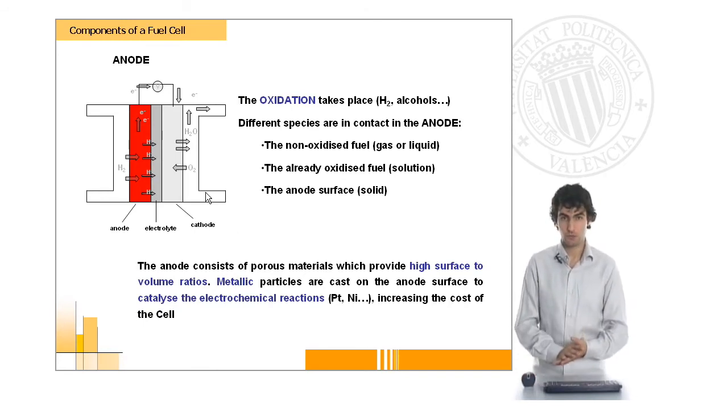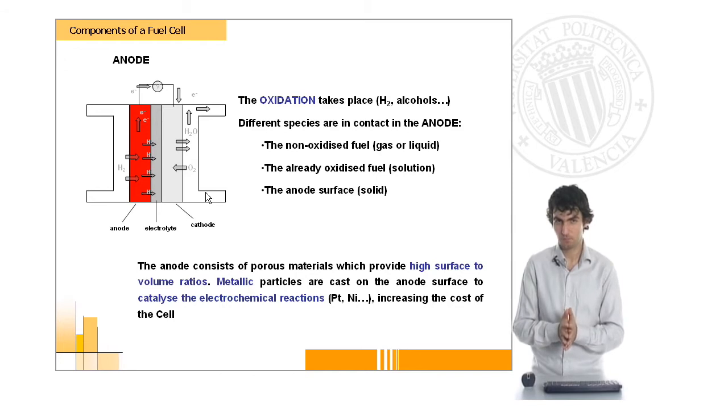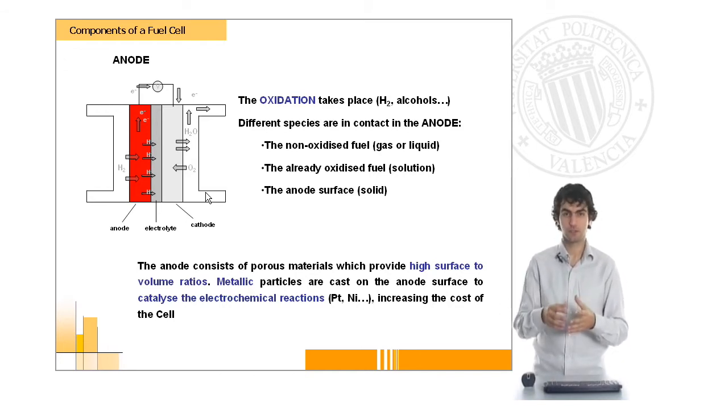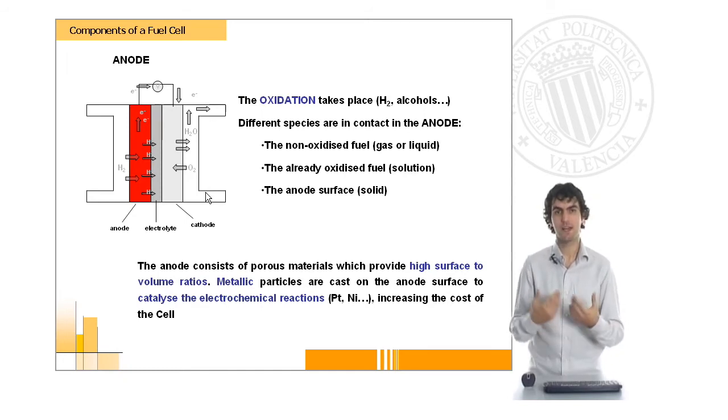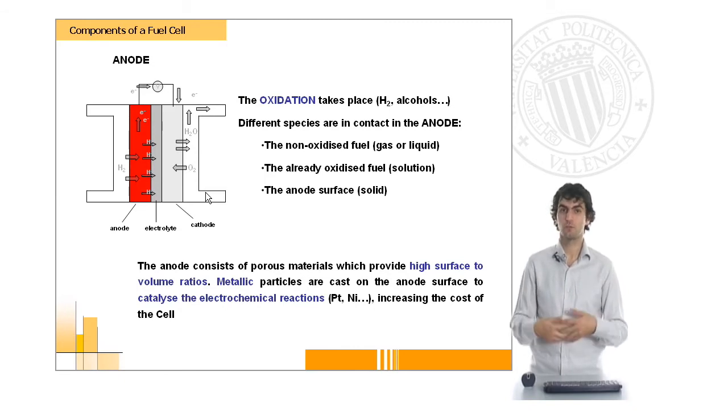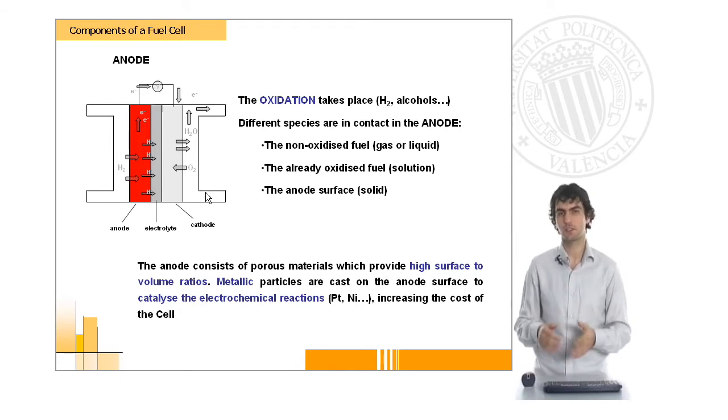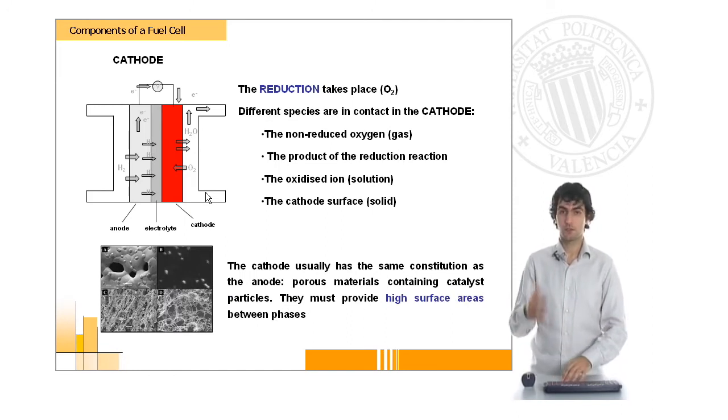In general, the anode as well as the cathode is formed of a porous material which is electrical conducting with some metallic particles cast on it. These metallic particles will act as the catalyst for the electrochemical reactions and this is going to make the fuel cell slightly more expensive because these particles are usually the most expensive part of the fuel cell.